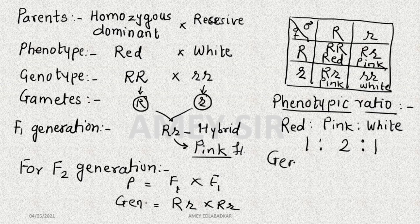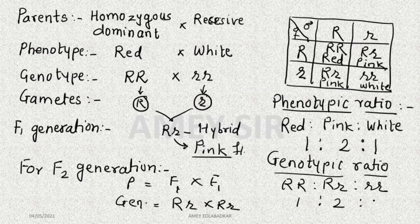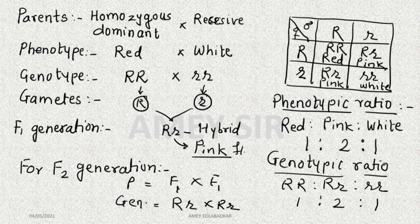When it comes to genotypes obtained and the ratios produced: capital R, capital R is 1; capital R, small r is 2; small r, small r is 1 — giving a ratio of 1:2:1. This is important: in incomplete dominance, the genotypic and phenotypic ratios are the same — both are 1:2:1, unlike Mendelian crosses where phenotypic ratio is 3:1.